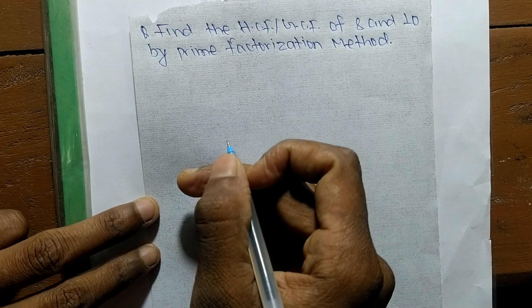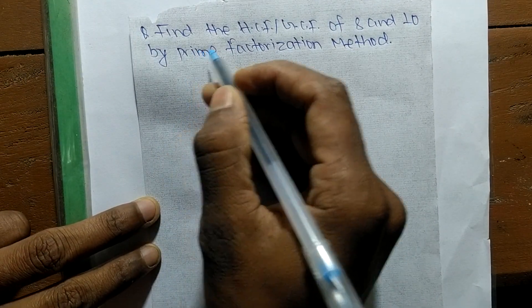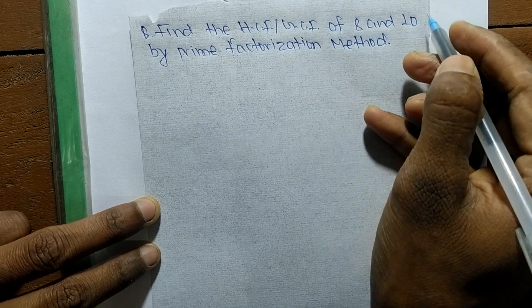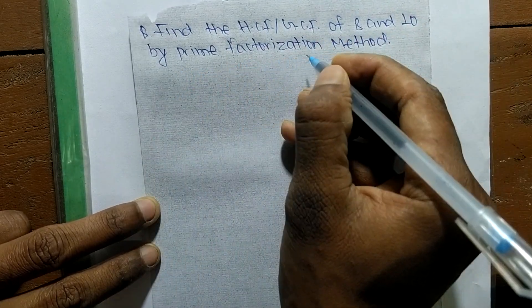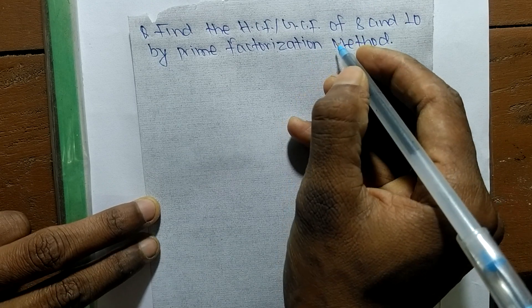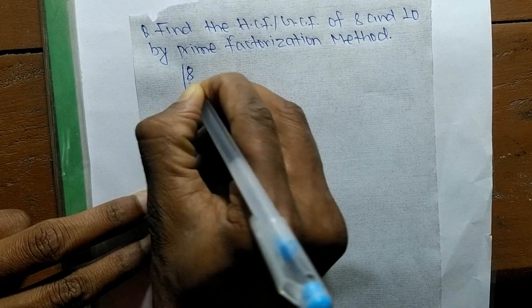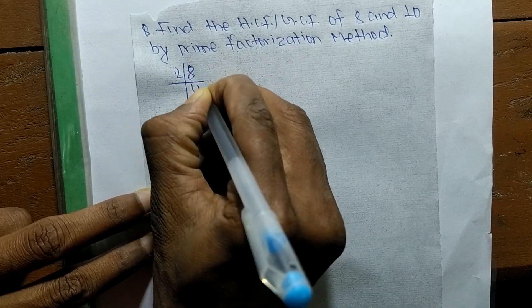Today in this video, we shall learn to find the HCF or GCD of 8 and 10 by prime factorization method. First, we find out the prime factors of 8: 2 times 4 equals 8, 2 times 2 equals 4, and 2 times 1 equals 2.